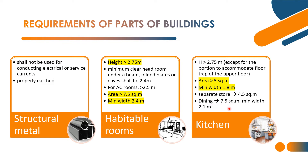Kitchen with a dining room: area shall not be less than 7.5 square meters, and minimum width of that kitchen-dining is 2.1 meters. So kitchen criteria: height, area minimum, separate store is 4.5 square meters area, with dining is 7.5 square meters minimum area, and minimum width is 2.1 meters.